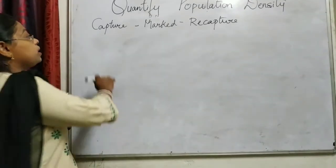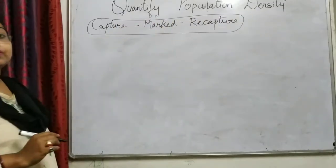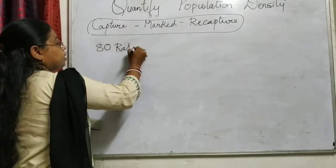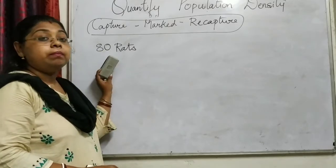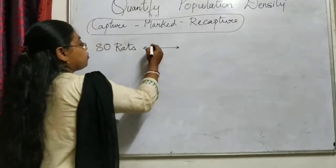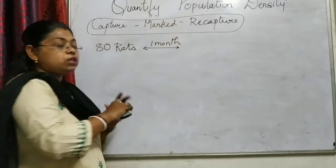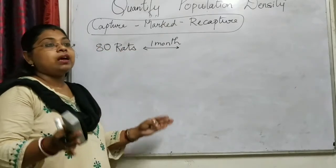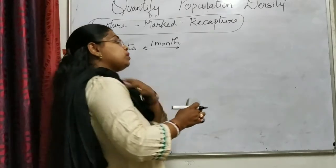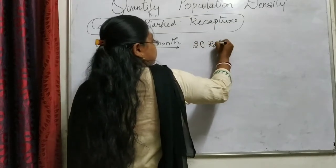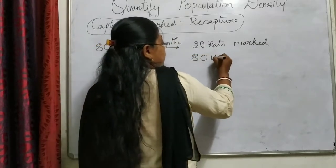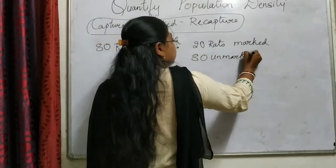Let's take an example to understand this concept. Suppose 80 rats were caught; these 80 were marked and released. After 1 month, from that same area, they were recollected. When recollected, it was found that 20 rats were marked and 80 were unmarked.